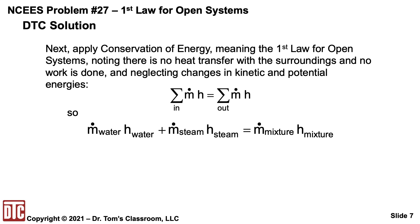That means m-dot water times h-water plus m-dot steam times h-steam — those are the two streams coming in — equals the one going out: m-dot mixture times h-mixture.